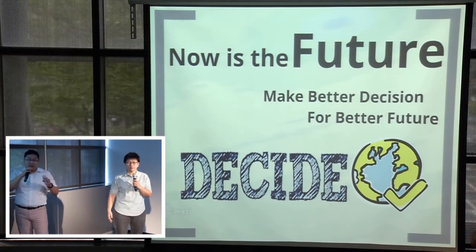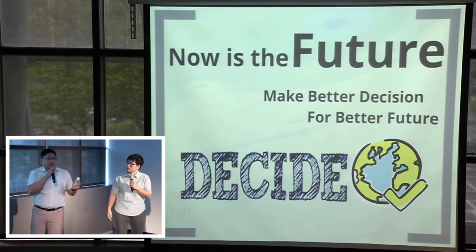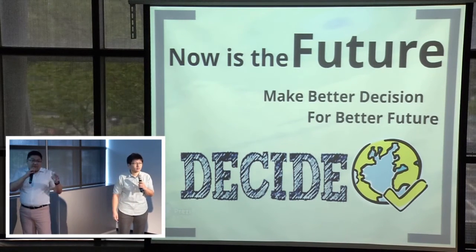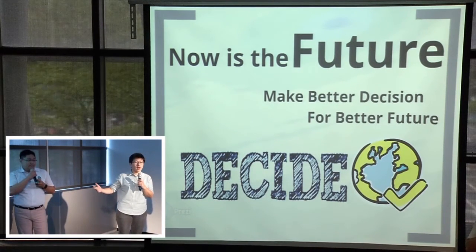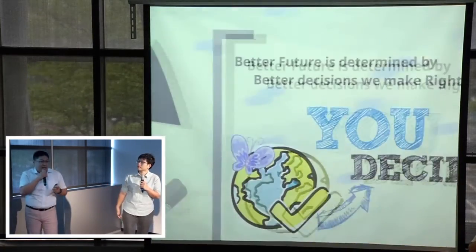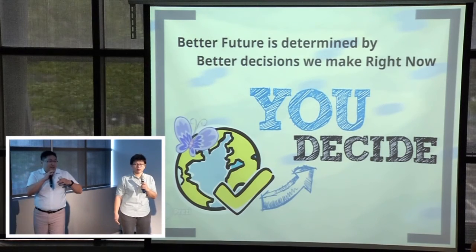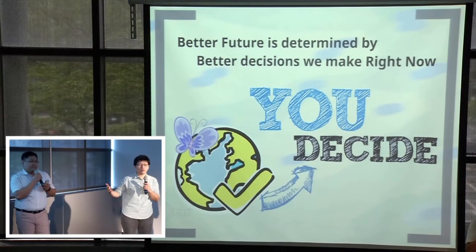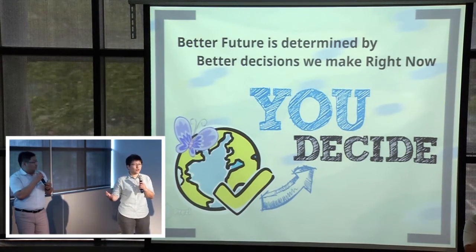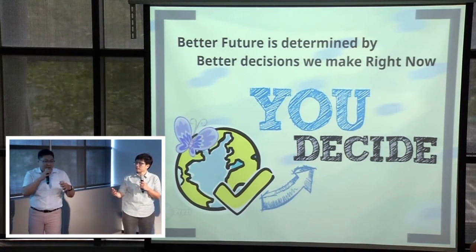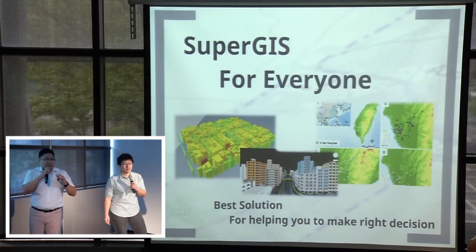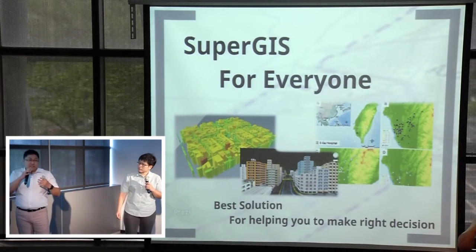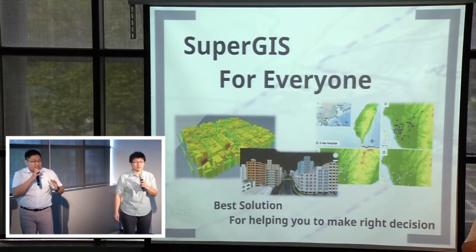Now is the future — because what we decide right now will influence what kind of future we are going to have. To make better decisions for a better future is very important, and that's why we introduce GIS as the key technology. The future should be designed by everyone, not only professionals and researchers in universities. Everyone participates in this world, so everyone should have the ability to decide our future. GIS used to be difficult to learn, but that is why SuperGeo is here — we provide SuperGIS, a GIS technology for everyone.